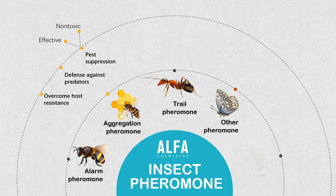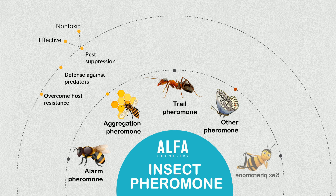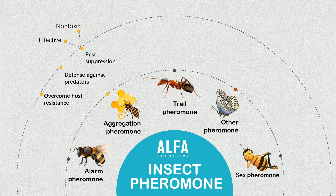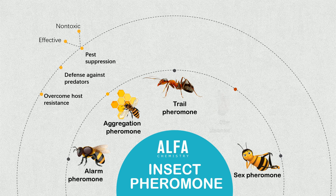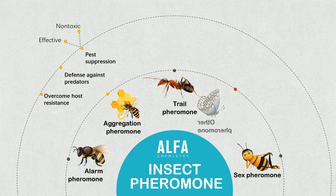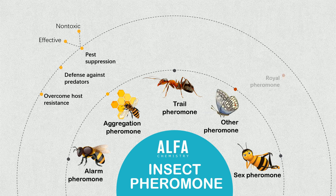Sex pheromones indicate the availability of the female for breeding. Male animals may also emit pheromones that convey information about their species and genotype. Other pheromones are classified based on their effects on behavior and fill many additional functions — for example, royal pheromones are produced by bees.